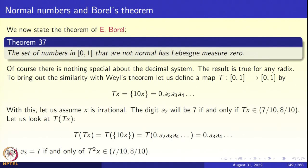Now we state the theorem of Borel. Theorem 37: The set of numbers in [0,1] that are not normal has Lebesgue measure zero. In other words, almost all numbers are normal. This is a celebrated theorem of Borel.